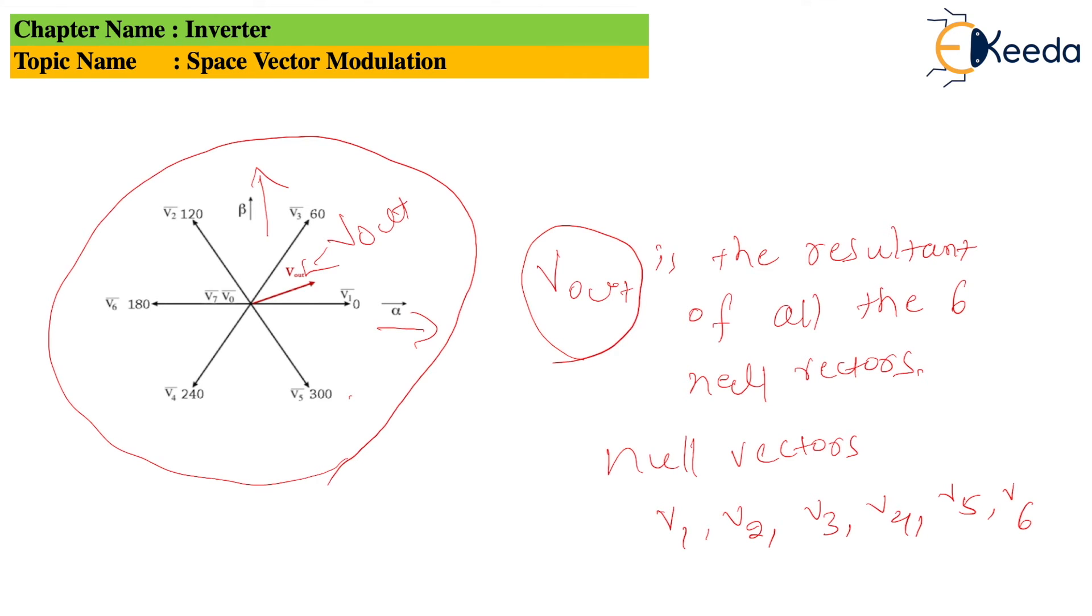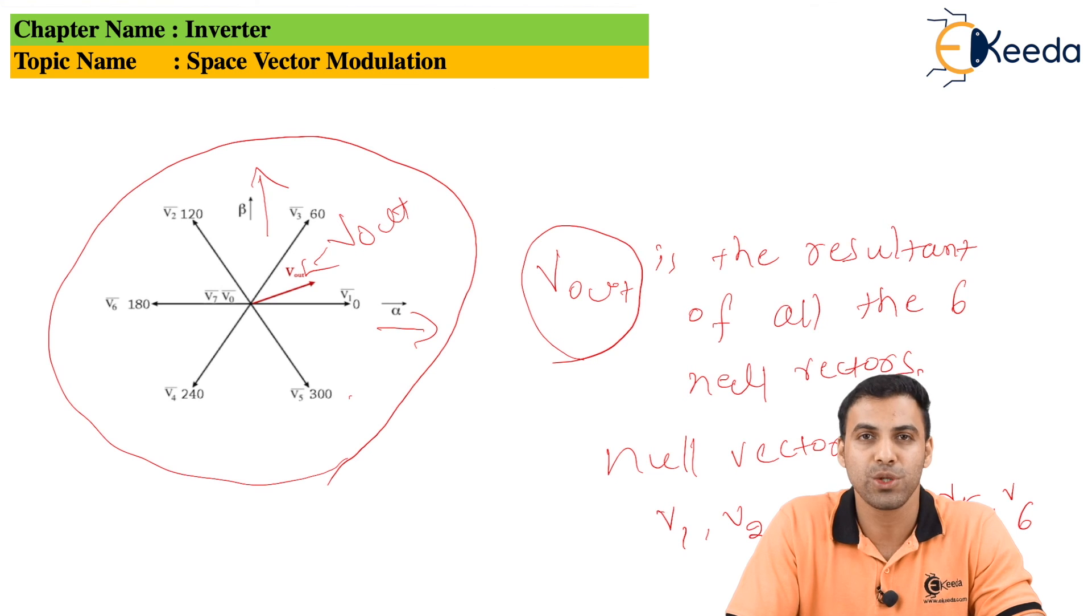In space vector modulation, all the voltages are represented in terms of vectors which are apart from each other by a phase angle of 60 degrees, and the resultant will be the output of the system. Thank you for watching this video. Please subscribe to Ikeda and stay tuned with Ikeda.